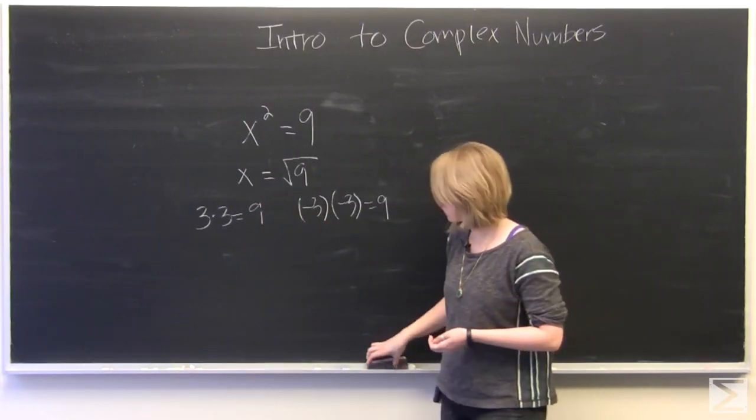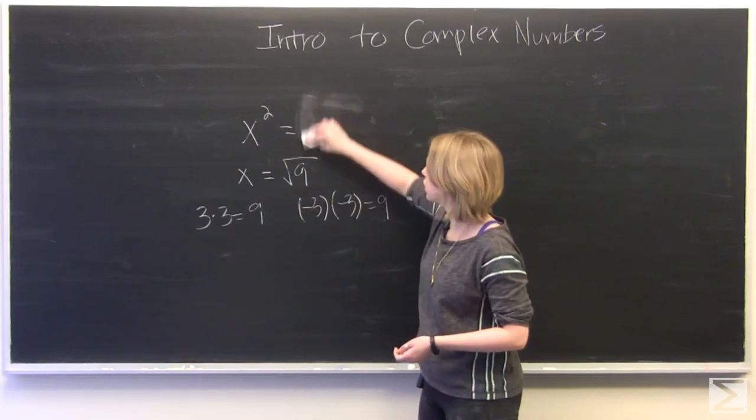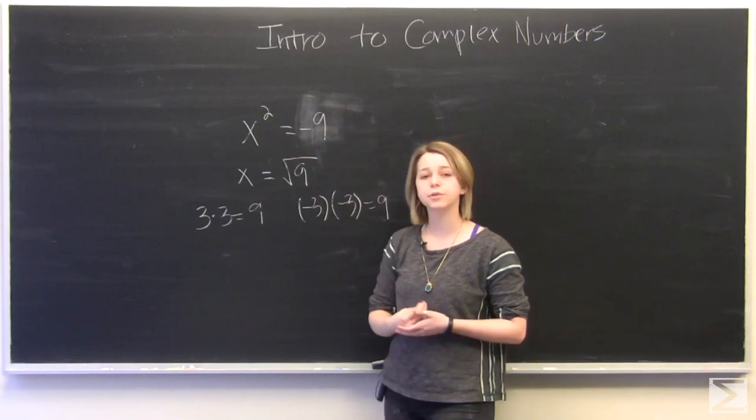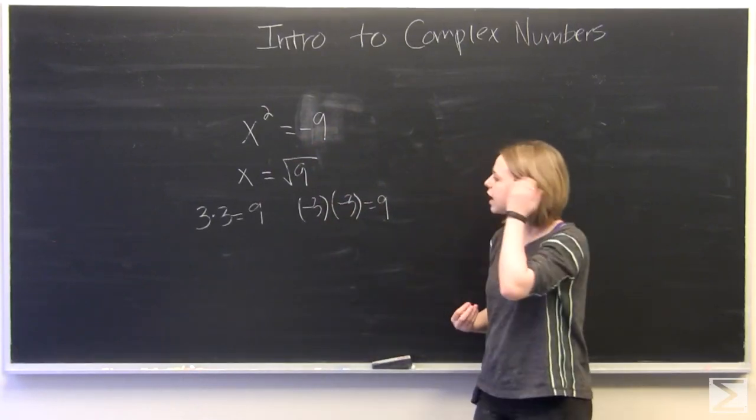And so what if, instead of positive 9, we're looking for when x squared is equal to negative 9? Now at this point, it's a little more difficult.